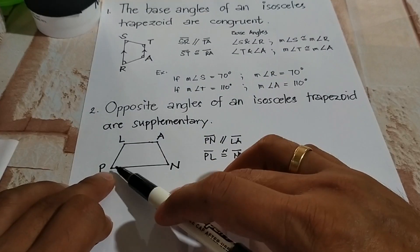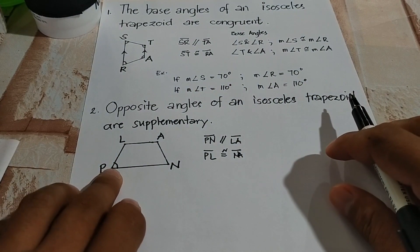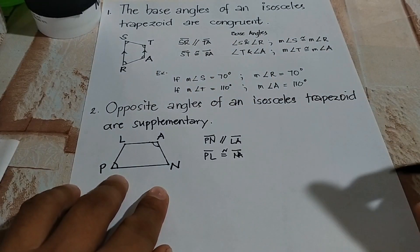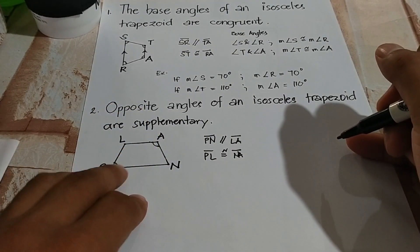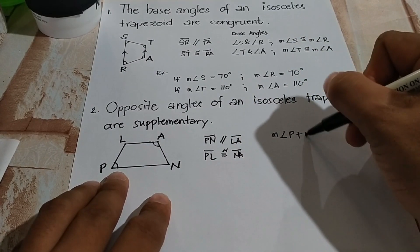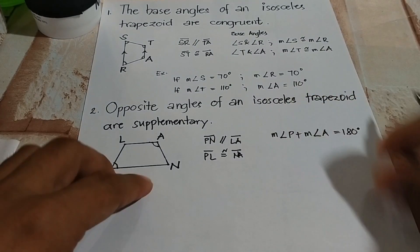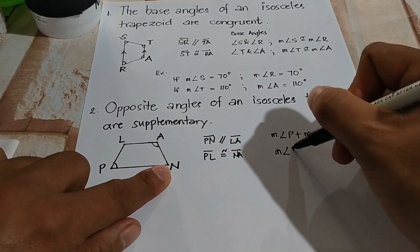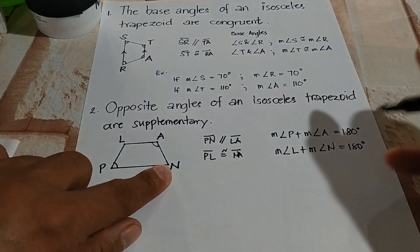If we look at angle P, the angle opposite to it is angle A. Since opposite angles of an isosceles trapezoid are supplementary, the measure of angle P plus the measure of angle A equals 180 degrees. Similarly, the measure of angle L plus the measure of angle N equals 180 degrees.